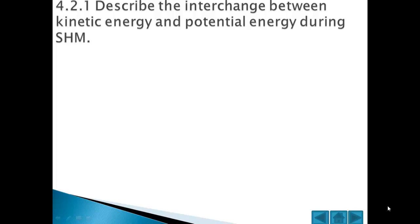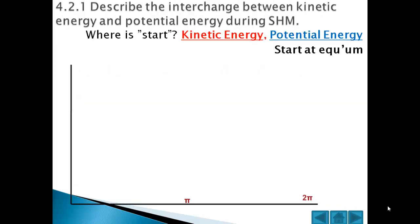We now need to look at the interchange between kinetic energy and potential energy during simple harmonic motion. Let's start off with the oscillator in the equilibrium position. This is when it's going the fastest — this is when its kinetic energy will be a maximum.